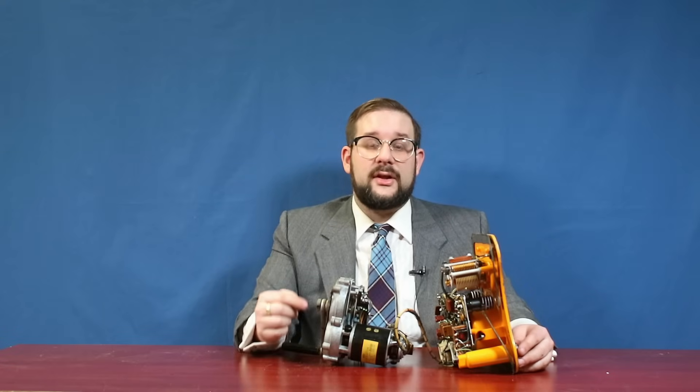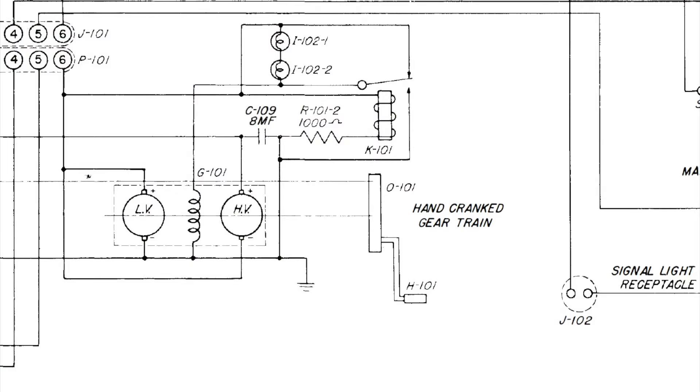Now as you can imagine, it is possible to both undercrank the dynamo, producing insufficient voltage to run the transmitter, and also to overcrank it, potentially overloading and damaging the circuit. And for this reason, the Gibson girl includes a very clever power regulation system. So how this works is that as you start turning the handle, the low voltage side of the generator will produce voltage due to the residual magnetism in the field coil assembly in the rotor.